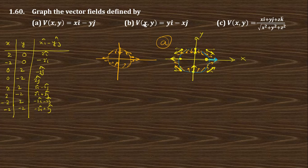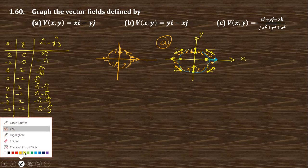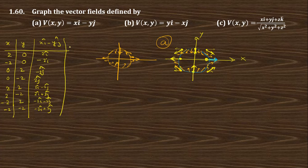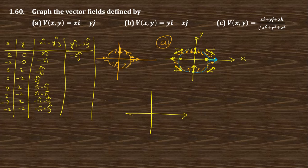Now for function b, we calculate for V = yi cap minus xj cap. For (2, 0): y is 0, x is 2, so this gives 0i minus 2j cap — at that point along that direction. For (-2, 0): this gives 2j cap — at that point 2j cap along that direction. For (0, 2): this gives 2i cap — that is in that direction.